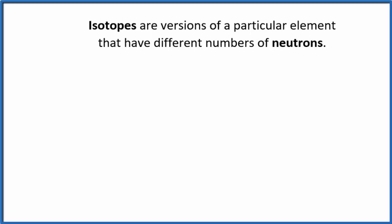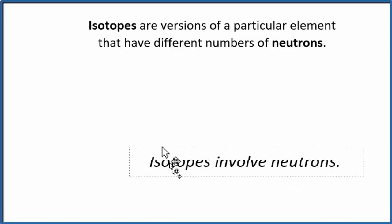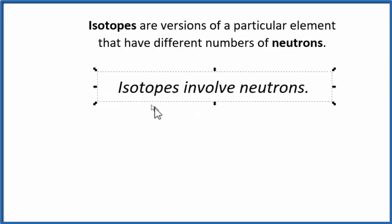When we're talking about isotopes, we're talking about these versions of an element, say carbon, and the only difference is that they have a different number of neutrons. Big idea is isotopes involve neutrons.